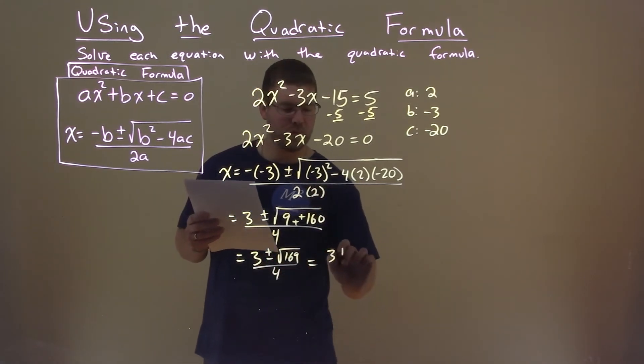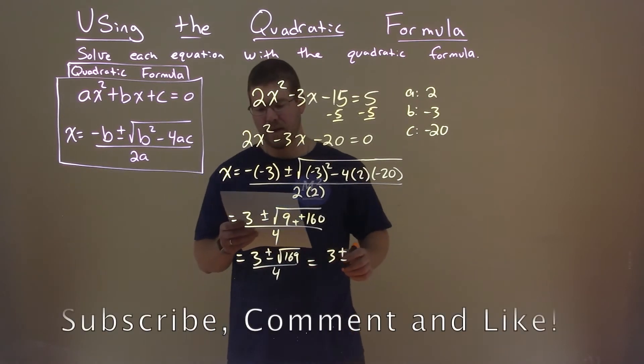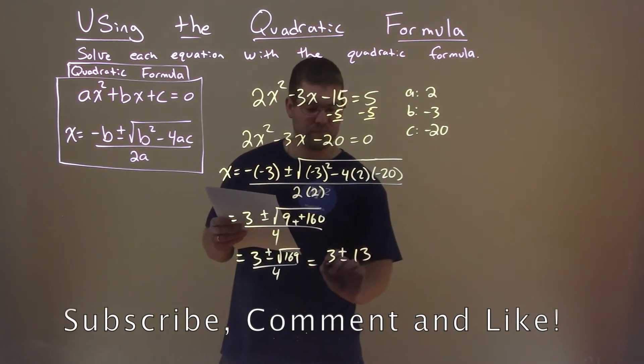Keep that going. We have 3 plus or minus, square root of 169 is 13, over 4.